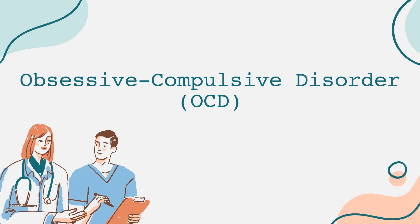Treatment for OCD generally involves therapy, medication, or a combination of both. The most effective form of therapy for OCD is called cognitive behavioral therapy, specifically a technique known as exposure and response prevention, or ERP. ERP gradually exposes individuals to their fears in a controlled manner and helps them refrain from engaging in compulsive behaviors. Over time, this can lead to reduced anxiety and help break the cycle of OCD.